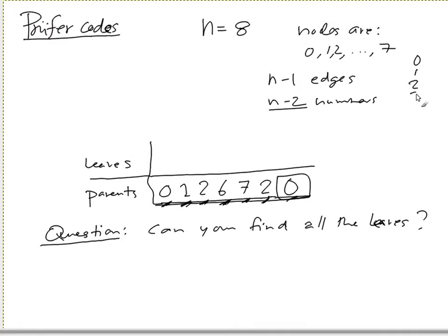0, 1, 2, 3, 4, 5, 6, 7. So 1 is here, 2 is here, 3 is not, right? 4 is not. 5, 6, 5 is not, okay?